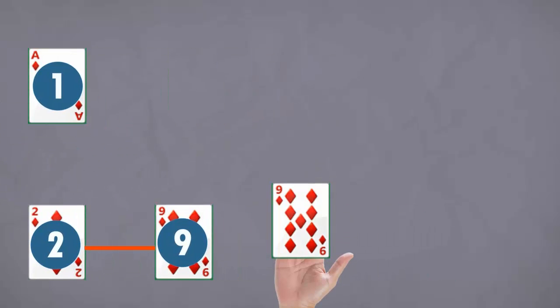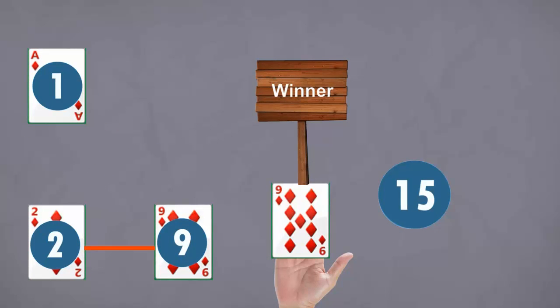Whoever has a hand of nine or as close to as possible is the winner. If a hand has 15 or any other value of over 10, only the digit to the right is counted, so 15 equals a value of 5.